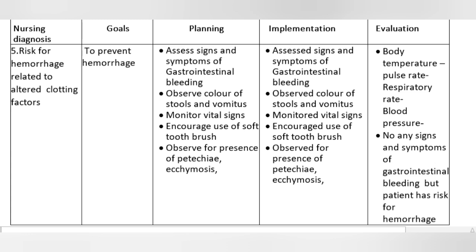Goals: To prevent hemorrhage. Planning: Assess signs and symptoms of gastrointestinal bleeding. Observe color of stools and vomitus. Monitor vital signs. Encourage use of soft toothbrush. Observe for presence of petechiae and ecchymosis. Implementation: Assessed signs and symptoms of gastrointestinal bleeding. Observed color of stools and vomitus. Monitored vital signs. Encouraged use of soft toothbrush. Observed for presence of petechiae and ecchymosis.